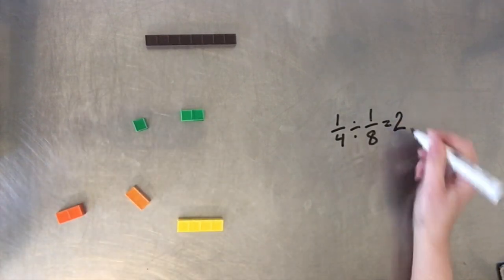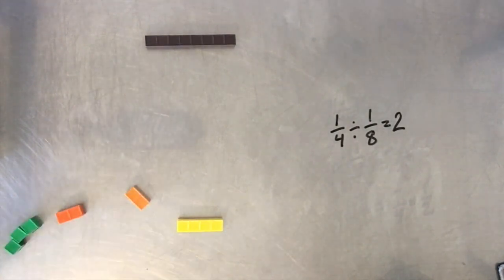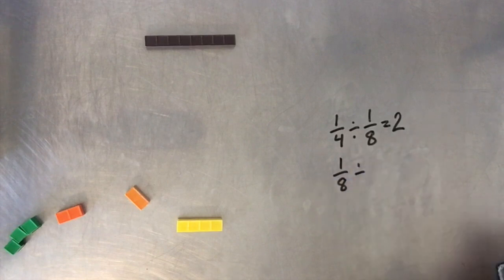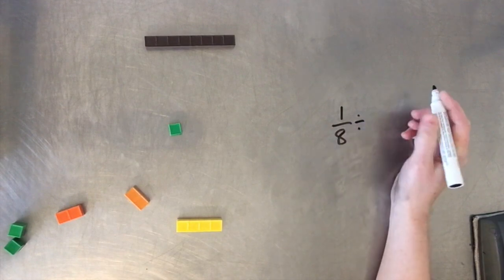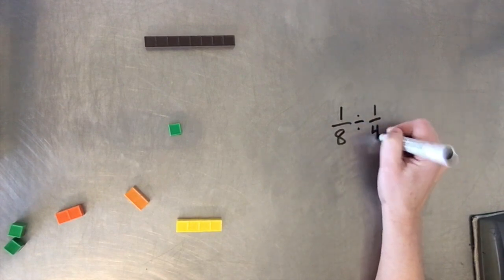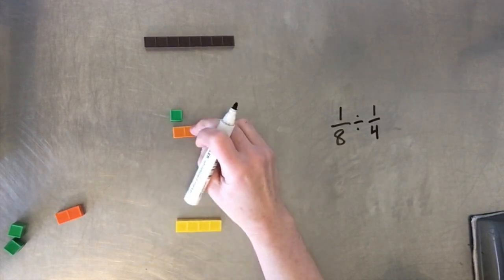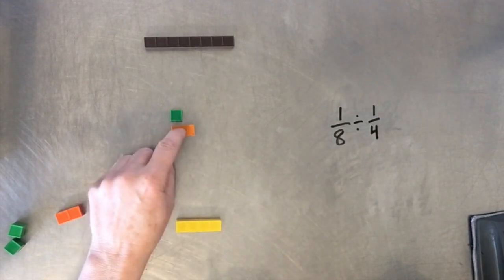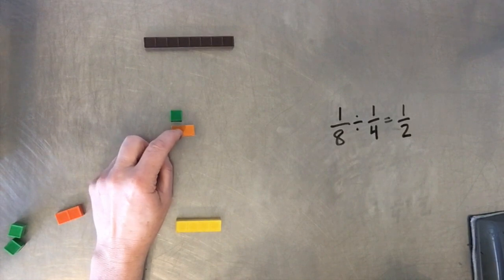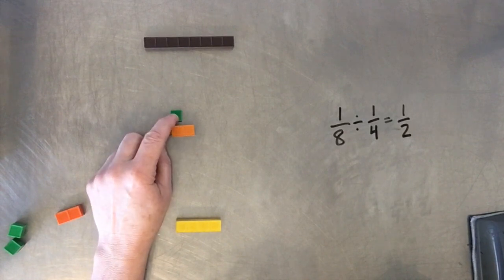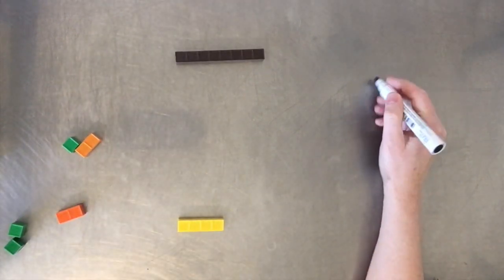We could do one-eighth divided by one-fourth. We have this and we want to know how many of these fit in there. Well, half of this fits in there because you can visually see that you can only fit half of this into here.